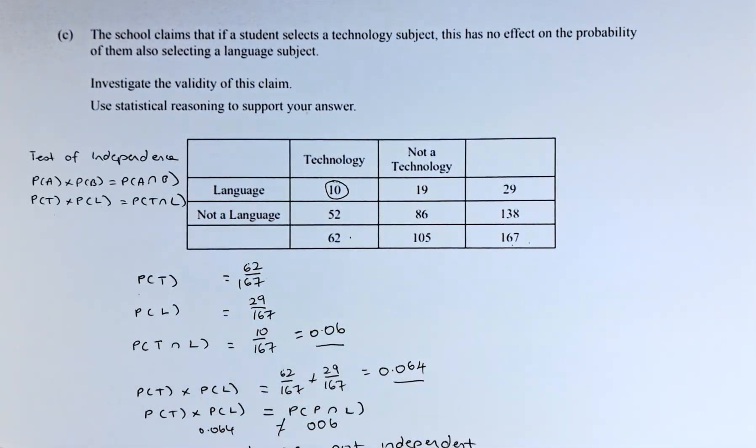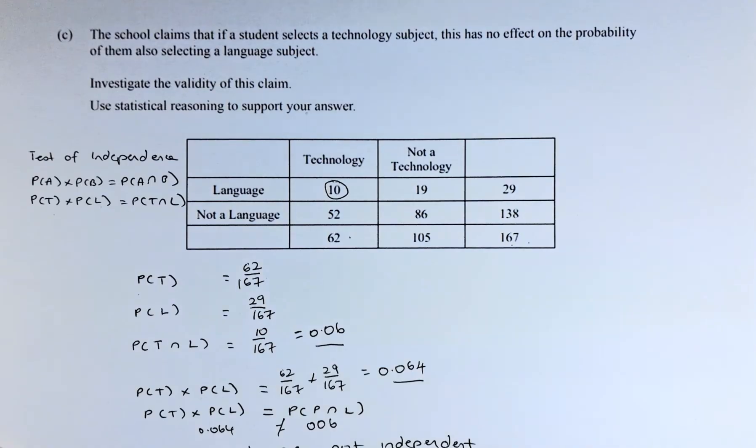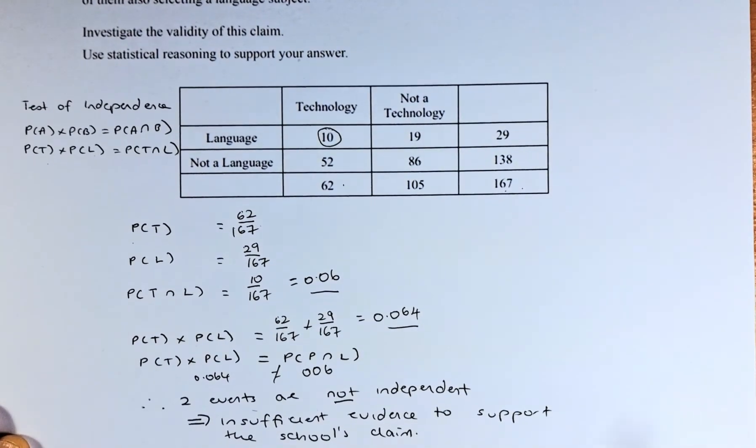In that case, you can conclude they are not independent. There is insufficient evidence to support the school's claim. There is insufficient evidence to support the school claim of the validity.